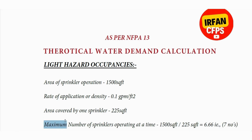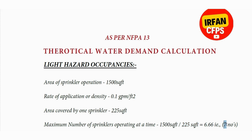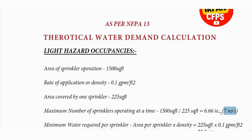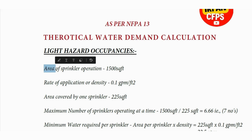The maximum number of sprinklers operating at a time is calculated using the formula: total design area of sprinkler operation divided by area covered by one sprinkler. This gives us approximately seven sprinklers. So the total number of sprinklers operating simultaneously in the design area will be seven.